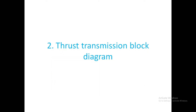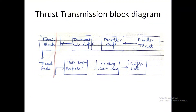Our second topic is the thrust transmission block diagram. Propeller thrust is transferred to the propeller shaft, also called the tail shaft, where the stern tube is also placed. After the propeller shaft, we have the intermediate shaft, and the intermediate shaft bearings also absorb some thrust and send it to the hull. After the intermediate shaft, thrust goes to the thrust block. The thrust pads and thrust collars absorb the thrust and send it to the bed plate or directly to the hull, then through holding-down bolts to the ship's hull.